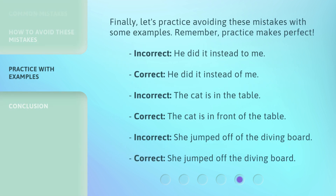Finally, let's practice avoiding these mistakes with some examples. Remember, practice makes perfect. Incorrect: 'He did it instead to me.' Correct: 'He did it instead of me.' Incorrect: 'The cat is in the table.' Correct: 'The cat is in front of the table.' Incorrect: 'She jumped off of the diving board.' Correct: 'She jumped off the diving board.'